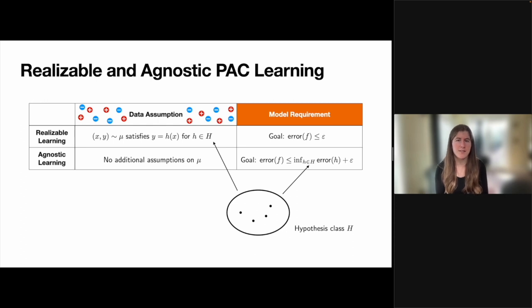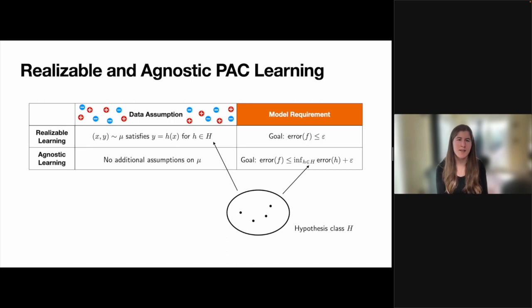Realizable learning introduces an assumption about the unknown distribution mu. In particular, it guarantees that the labels of mu will match some hypothesis from a constrained class of hypotheses H. The outputted model is then still required to have good accuracy with respect to the target distribution. On the other hand, agnostic learning makes no assumptions about the data distribution, but introduces a constrained hypothesis class as a way to modify the learning goal. Rather than requiring good accuracy, agnostic learning only requires that the outputted model has accuracy competitive with the best performing hypothesis in this constrained class.